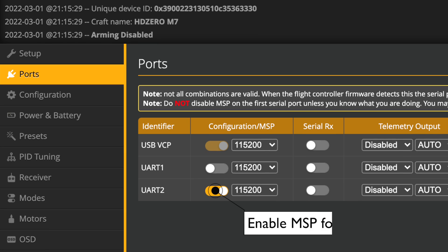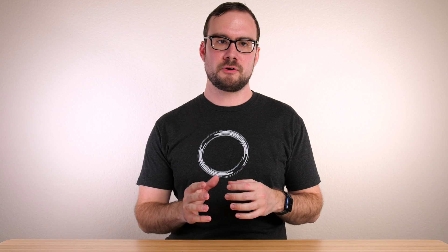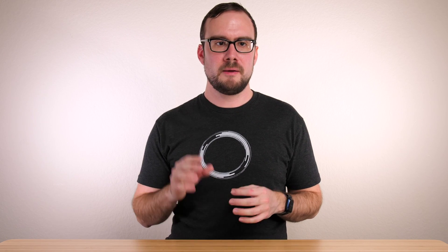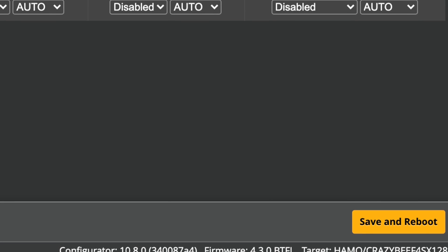Another thing that's very easy to miss is that on the ports tab in Betaflight, you have to enable MSP for the UART your VTX is connected to. This is a critical step and if you don't do this, your OSD won't work at all. Make sure you set the value here and then click save down at the bottom corner to save that value.